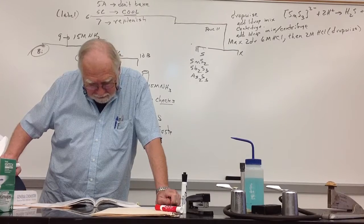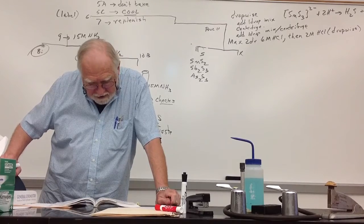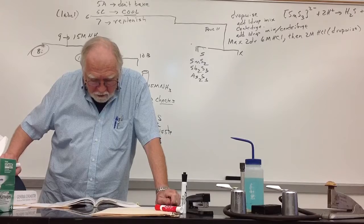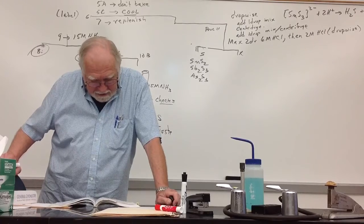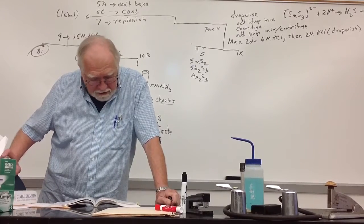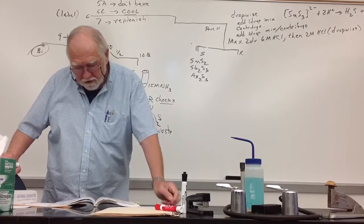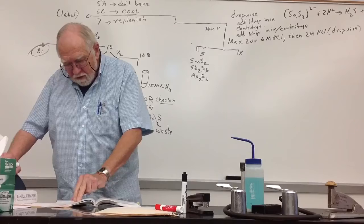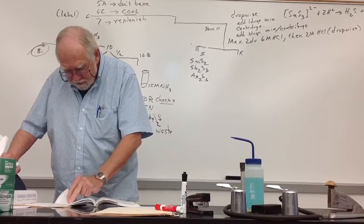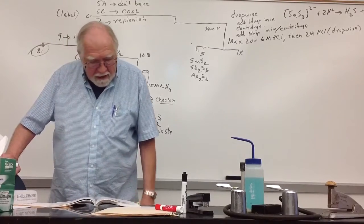Large excess of HCL, watch the precipitate. Same sort of thing - you're adding water and ammonium acetate because you don't want the precipitate to break up into colloidal suspension. Then you go to procedure 12, and here's the whole reason for being careful with your pH.